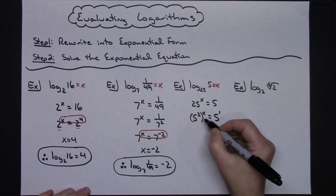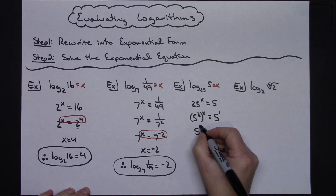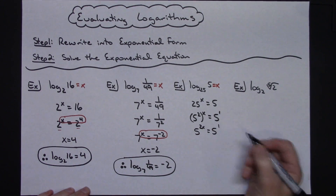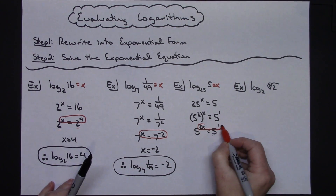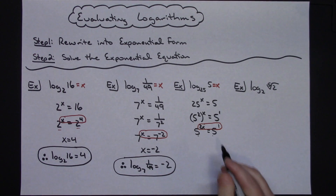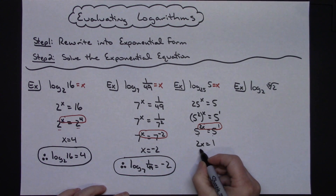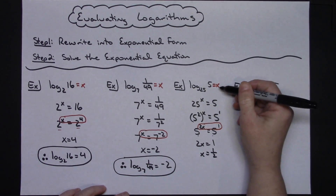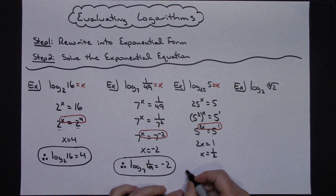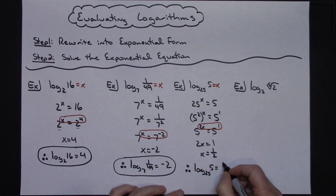Power raised to a power — I multiply those two exponents — so I rewrite one more time to get rid of the parentheses: 5 raised to the 2x equals 5 raised to the first. I've got like bases, so I set those exponents equal. I don't have x by itself — I've got 2x equals 1. Dividing both sides by 2, x equals 1 half. Therefore, the log of 5 base 25 is equal to 1 half.